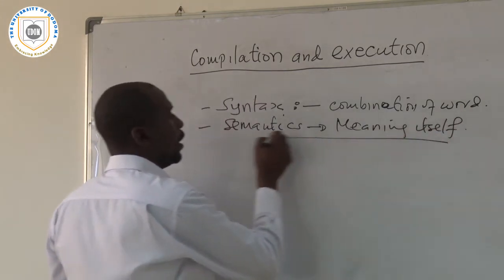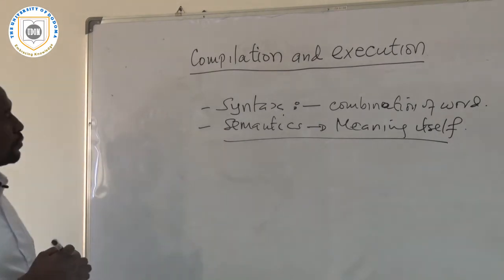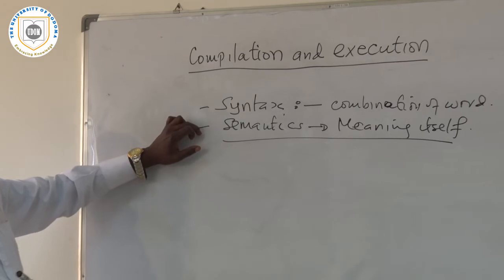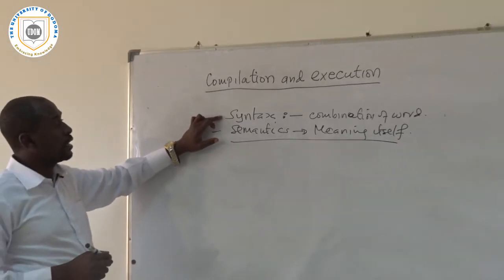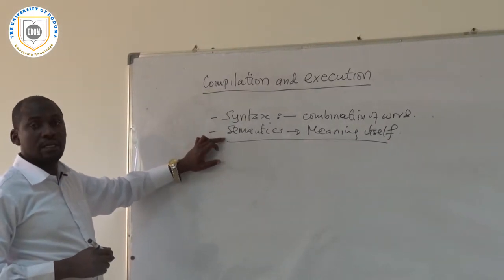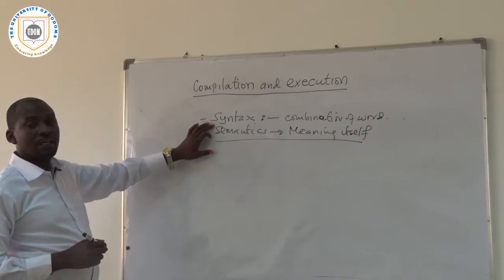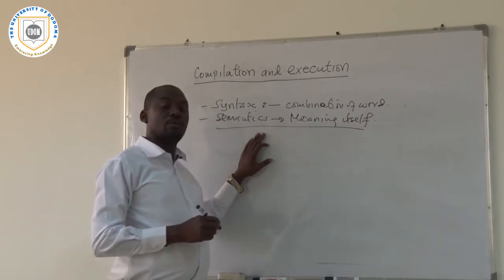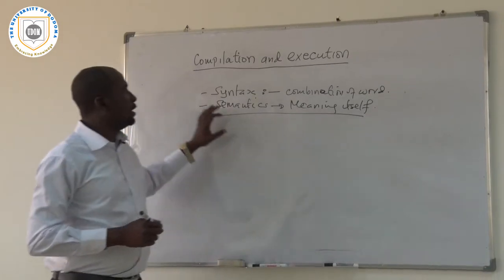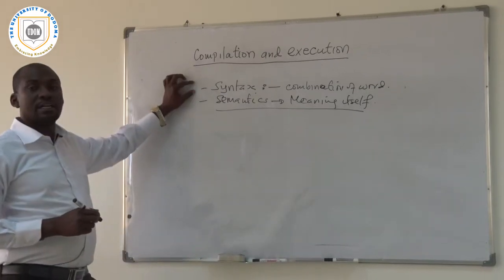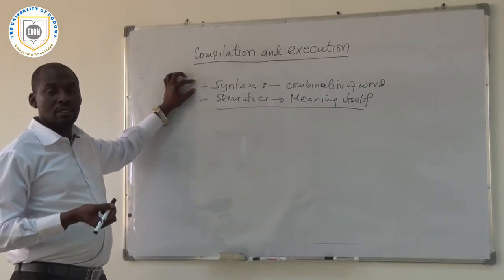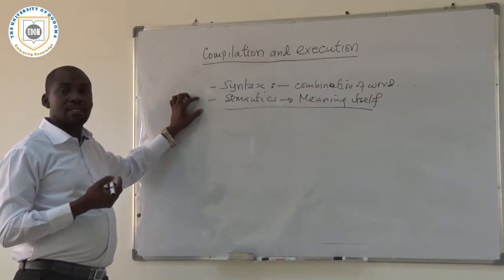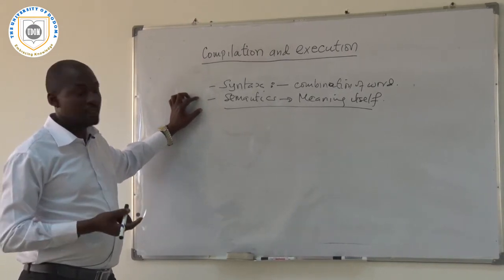When you write a program, you need to check for both syntax error and the semantics error — what we call the syntax correctness and the semantics correctness. Because a program can be either syntactically correct or semantically wrong.